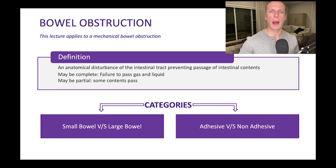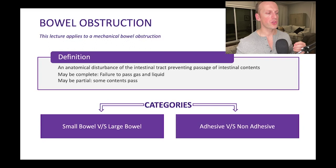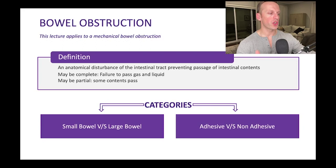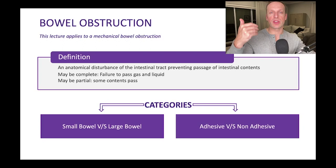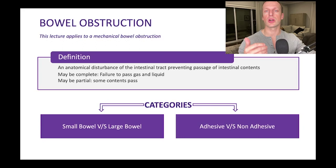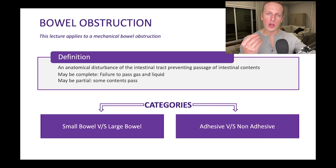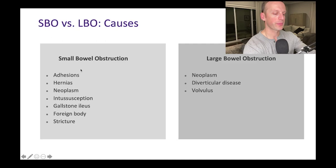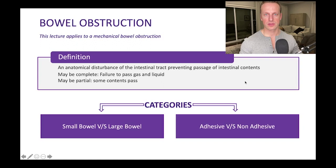Let's get on to the meat of the presentation: bowel obstruction. Think about categories as you consider these disease processes. What we're talking about today is mechanical obstruction, which is different from functional obstruction. Functional obstructions — like paralytic ileus post-surgery or acute colonic pseudo-obstruction (Ogilvie syndrome) — involve failure to pass gas and stool with no anatomic abnormality. Mechanical obstruction is an anatomical disturbance of the intestinal tract that prevents passage of its intestinal contents.